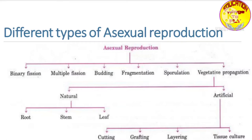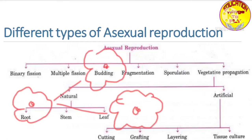Let me give you a brief idea about binary fission. Binary fission means when an individual divides into two parts and reproduces. We see binary fission mostly in amoeba — amoeba is a unicellular organism. It divides into two parts, and those two parts become new individuals.